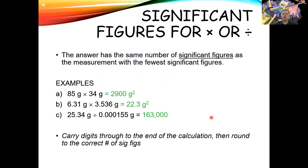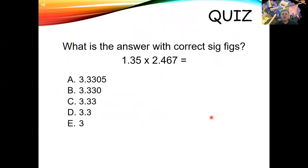When doing multi-step calculations, carry all digits through every step and only round at the very last step. Let's practice: what is the answer with the correct number of sig figs? One value has three sig figs and the other has four, so the answer must have three sig figs — it's answer C. When doing this yourself, enter it in the calculator, determine the sig figs, then round.